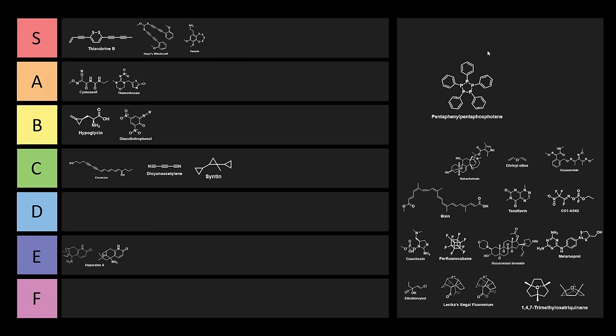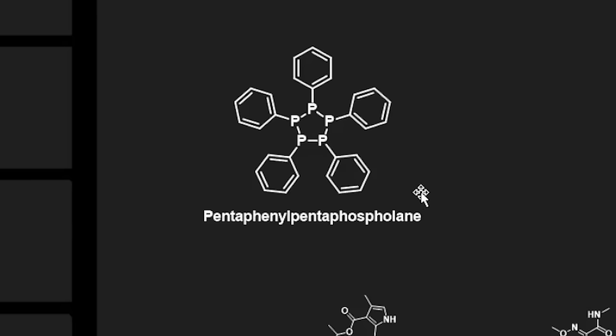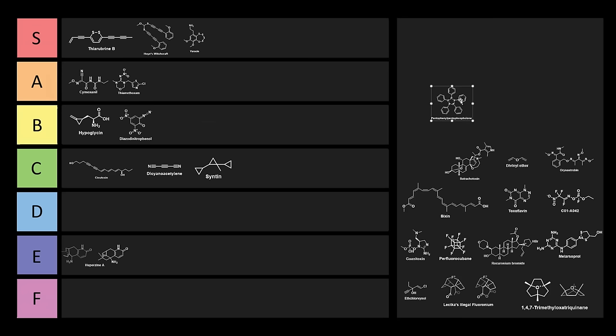I was making this as an intermediate to Woolen's Reagent, which is this really awful selenium-containing chemical. Woolen's Reagent is even worse in terms of smell, but just look at this chemical. It's five phosphoruses in a ring. What the heck? This is S-tier. Complete S-tier. Five phosphoruses in a ring. What on earth is going on?